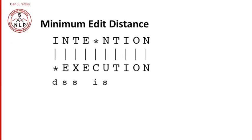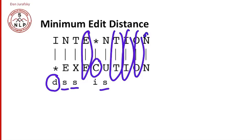So we can think about this alignment as having a set of operations that generated the alignment. So here, to turn intention into execution, we have to delete, D for delete, an I, we substitute an N for an E, substitute a T for an X, insert a C, substitute an N for U, and the rest of the letters, the E, the T, I, O, N are all the same.